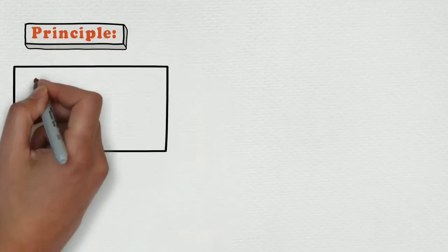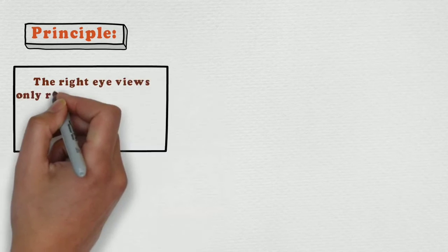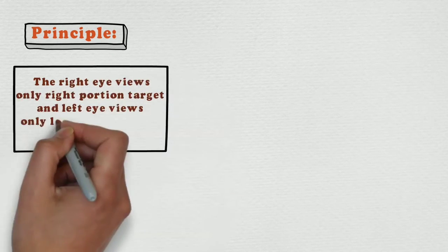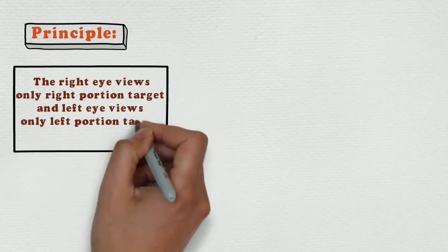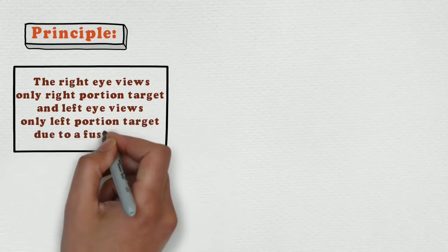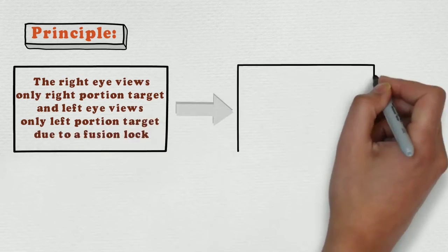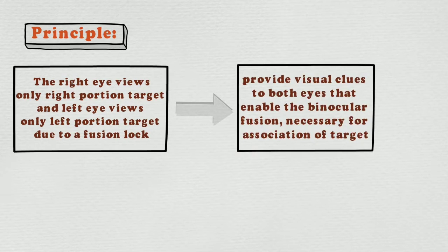Principle of binocular refraction. The right eye views only the right portion of the target and the left eye views only the left portion of the target due to a fusion lock. This provides visual input to both eyes that enables the binocular fusion necessary for association of the target.